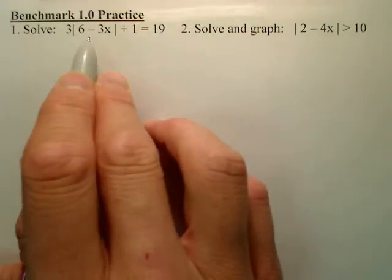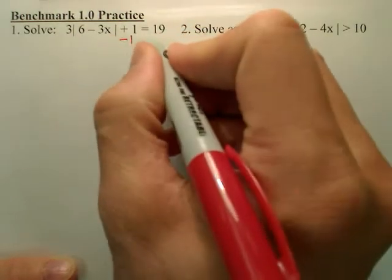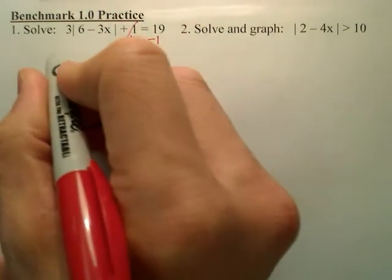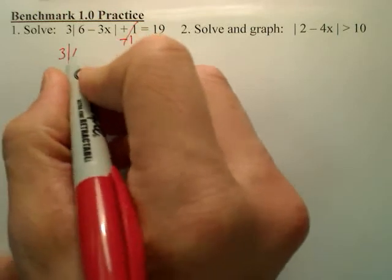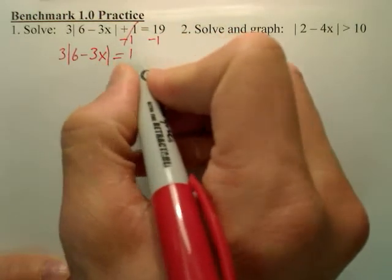When I want to solve this, the first step is to get the absolute value by itself. So let's first minus the 1 over. That's gone. Gives you 3. 6 minus 3x equals 18.